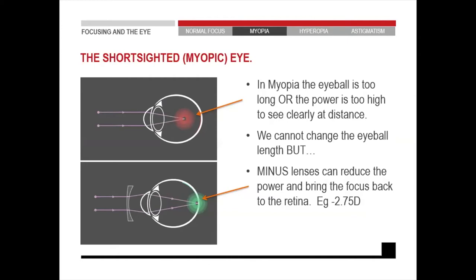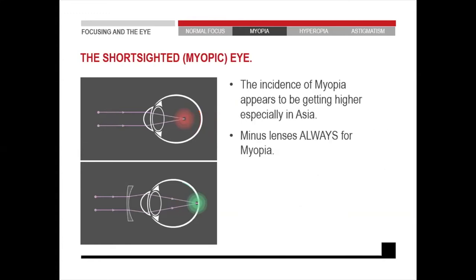Why does the light fall in front of the retina? Because the optical power of the eye is too strong — above plus 60 diopters. The other reason is the eyeball might be too long. Unfortunately, we can't change the size of the eyeball, but we can change the optics of the eye, and we do this with a minus lens for a myopic eye. Another memory tip: minus starts with 'M' and myopic starts with 'M' — so a myopic eye uses a minus lens to correct it.